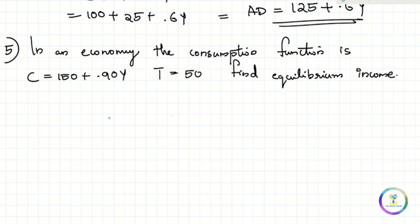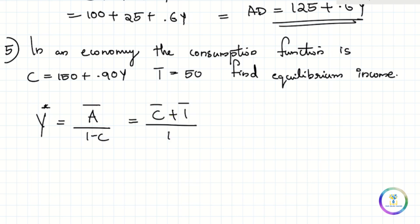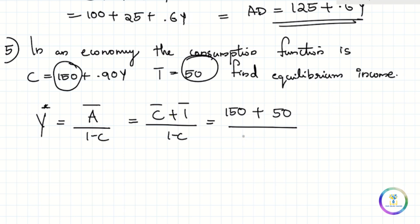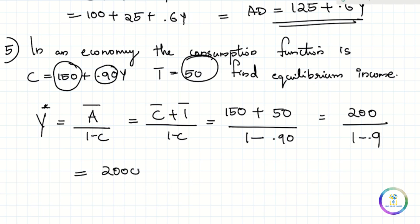Using the equilibrium equation Y equals Ā by (1 minus c): if C-bar equals 150, I-bar equals 50, and c equals 0.9, then Y equals 200 divided by (1 minus 0.9), which gives equilibrium income of 2000.